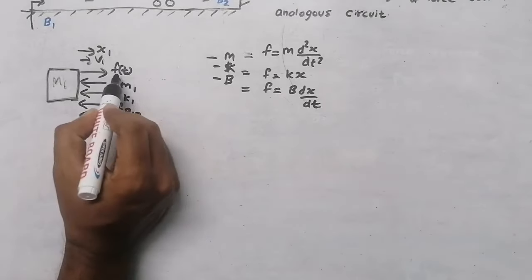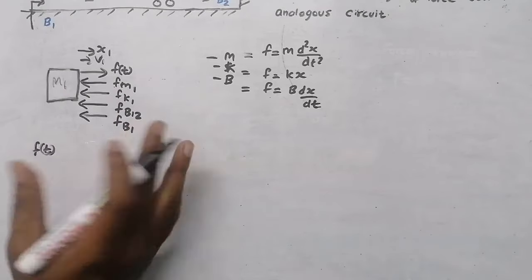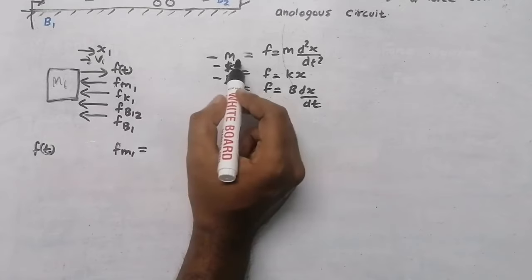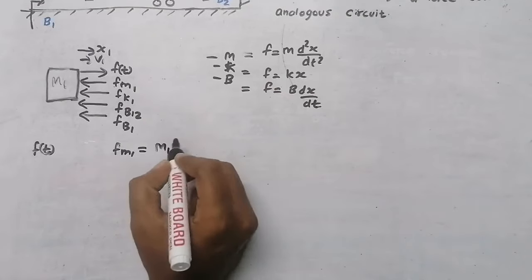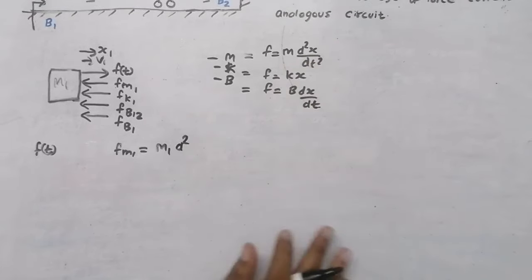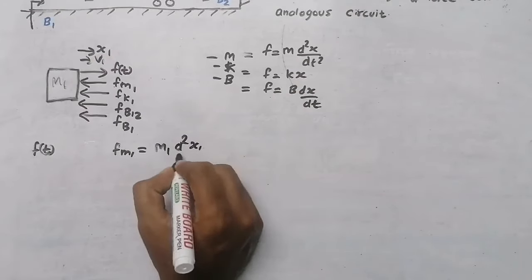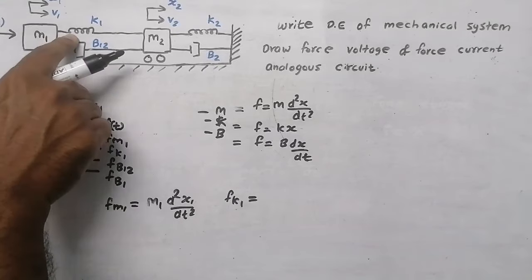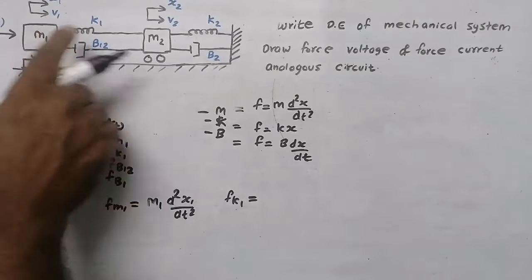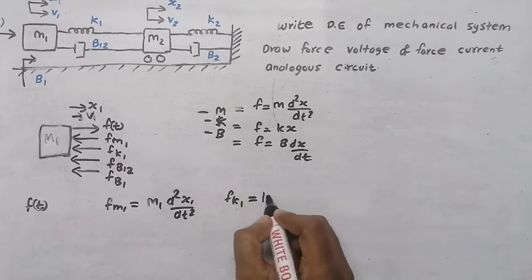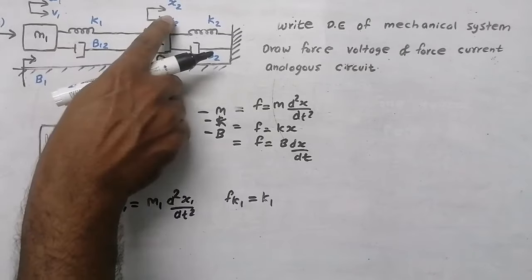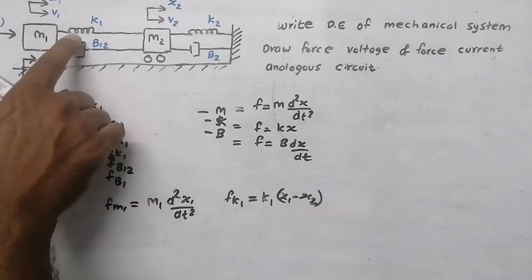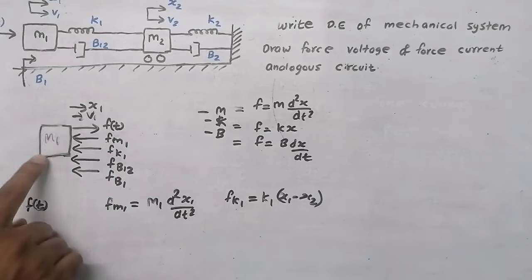Now we write the force equations. f(t) is our applied force. fm1 is due to mass: m1·(d²x1/dt²). For fk1, since spring k1 is common to both mass 1 and mass 2, we write k1·(x1 - x2) — we write x1 minus x2 because we are drawing the free body diagram of mass 1. If drawing for mass 2, we would write x2 minus x1.